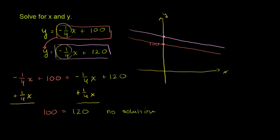Well, the only way that that would ever be true is if 100 and 120 were the same number, and they're not the same number, so you're never going to have a solution of this system. These two lines are never going to intersect, and that's because they have the exact same slope.